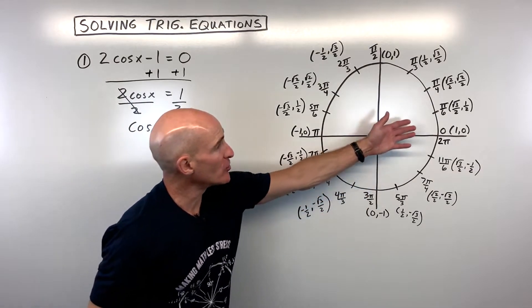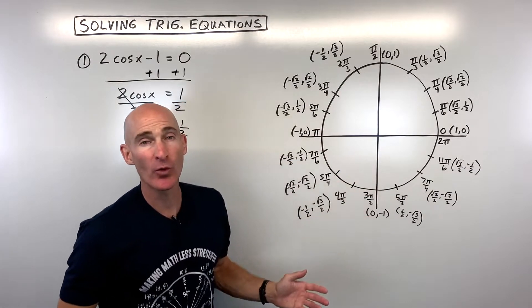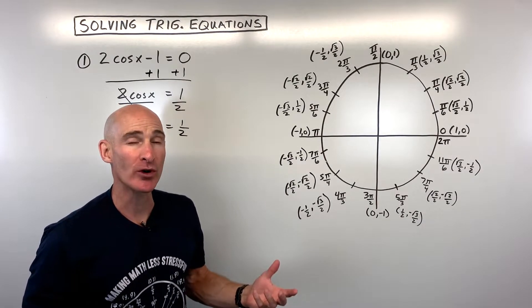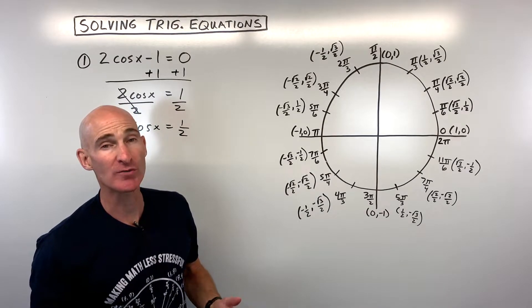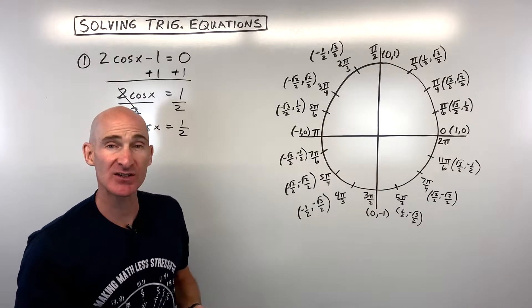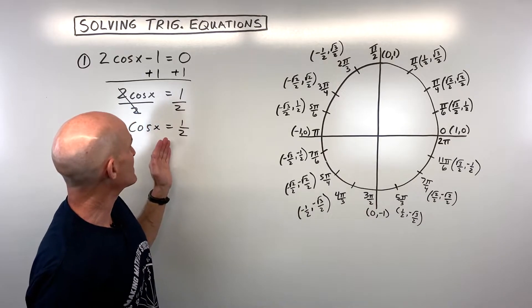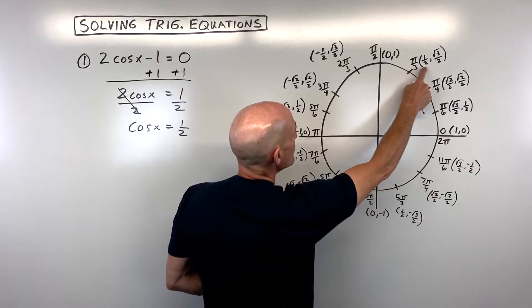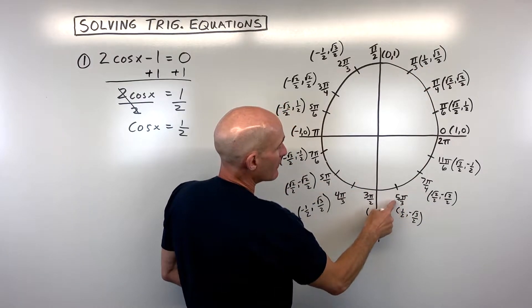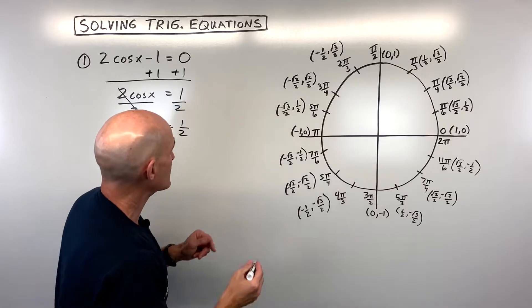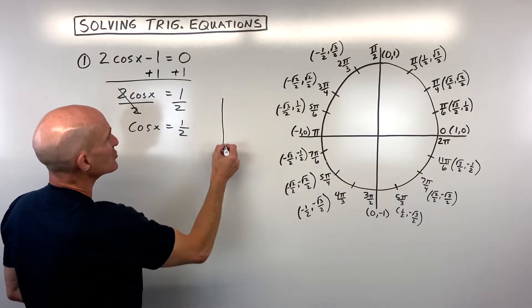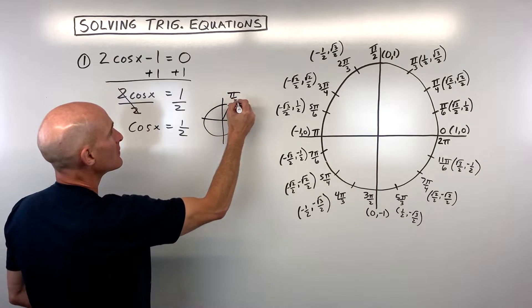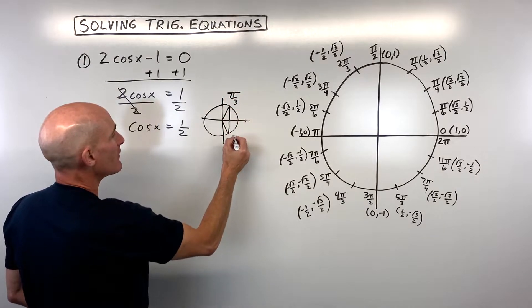Go to your unit circle and ask: where is cosine equal to one half? Remember, cosine corresponds to the x-coordinate, sine corresponds to the y-coordinate, and tangent is y divided by x. So where is the x-coordinate one half? That's going to be at pi over three and at five pi over three.